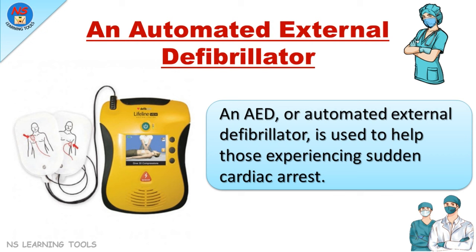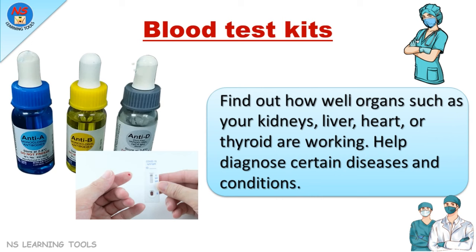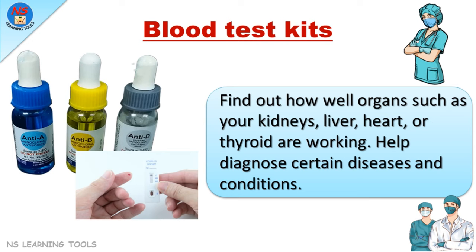Blood test kits. Blood test kits find out how well organs such as your kidneys, liver, heart, or thyroid are working, and help diagnose certain diseases and conditions.